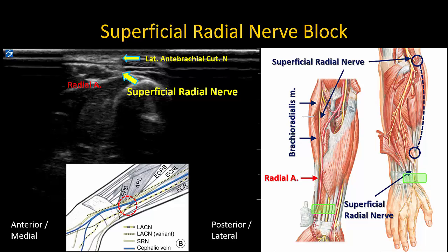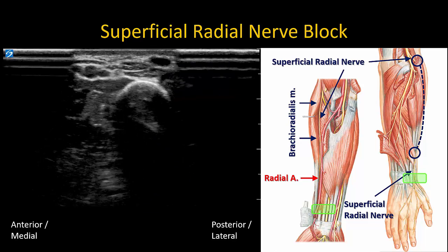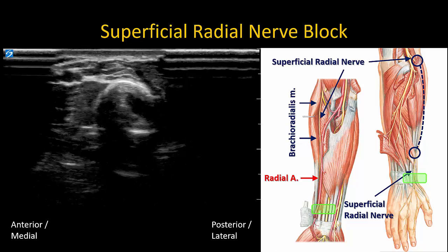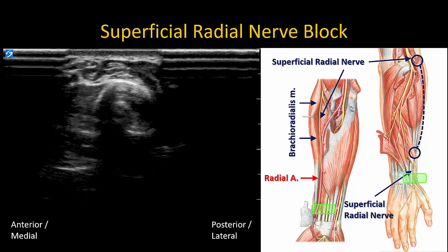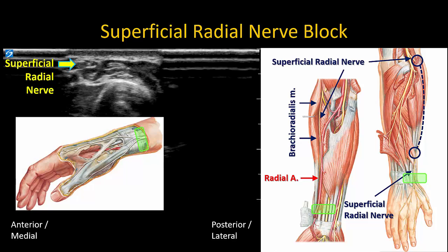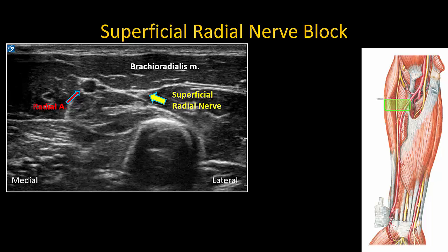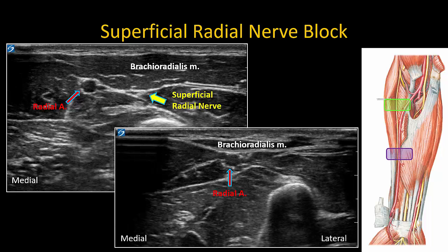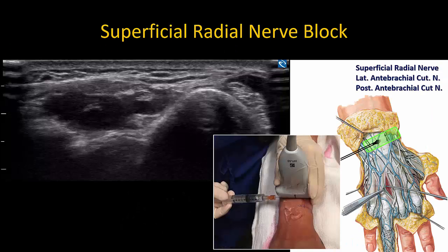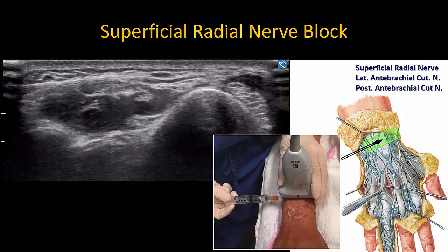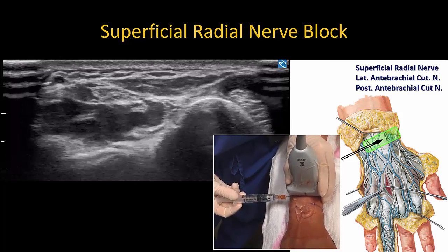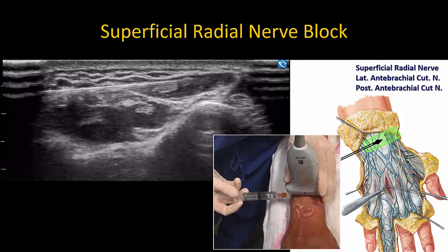Beyond the anatomical snuff box, the superficial radial nerve pierces the investing fascia to become subcutaneous, while the lateral antebrachial cutaneous nerve dissipates into its terminal branches. The superficial radial nerve may be blocked anywhere along its course under the brachioradialis muscle. Another simple alternative is subcutaneous infiltration over the posterolateral wrist, just proximal to the anatomical snuff box. Doing this under ultrasound guidance helps ensure injection in the correct subcutaneous plane above the investing fascia and under the dermis.